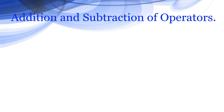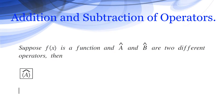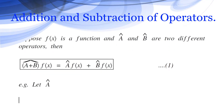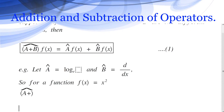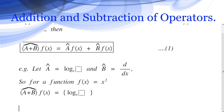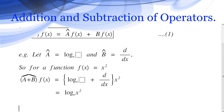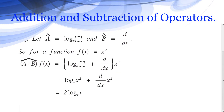Addition and subtraction of operators: suppose f(x) is a function and Â and B̂ are two different operators. Then (Â + B̂)f(x) = Âf(x) + B̂f(x). This is equation 1. For example, let Â = log base e and B̂ = d/dx, and f(x) = x². Then (Â + B̂)f(x) = log_e(x²) + d/dx(x²) = 2·log_e(x) + 2x. This is equation 2.